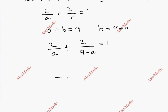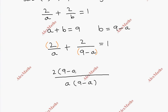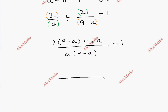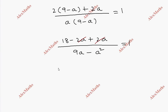Now, taking the LCM — the denominator's product gives us the LCM. So we get: 2a(9 minus a) as the denominator. Looking at the numerator, we have 18 minus 2a plus 2a. So the numerator simplifies and the 2a terms cancel, giving 9a minus a squared equal to 1. Cross multiplying: 18 equals 9a minus a squared.